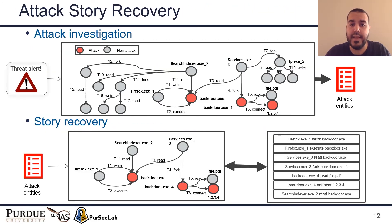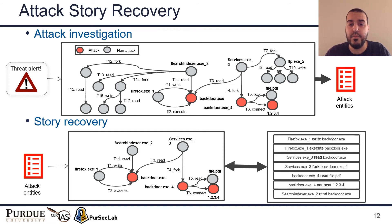After model learning, whenever there is an attack incident and given a threat alert with an attack symptom event, ATLAS extracts sequences from the causal graph and uses the trained model to identify related attack entities. As shown in the figure on the slide, the red nodes in the causal graph represent attack entities in the audit logs. ATLAS then uses the identified attack entities in the attack story recovery step to extract a concise attack subgraph containing only attack-related events. The attack story is also represented in text format with seven attack events ordered by their timestamp in the audit logs.